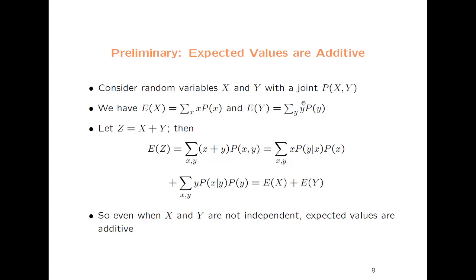Here is a very short technical introduction which is also a little bit surprising: expected values are additive. If you have two variables x and y with a joint distribution — so they're not assumed to be independent — the expectation of x is the sum over the values of x times their probability, and same thing for y. If you have a quantity which is the sum of x and y, then the expected value of the sum is the sum of the expected values of x and y. This is very important for the lecture. The correlation and dependencies are not important when it comes to expected values of sums.